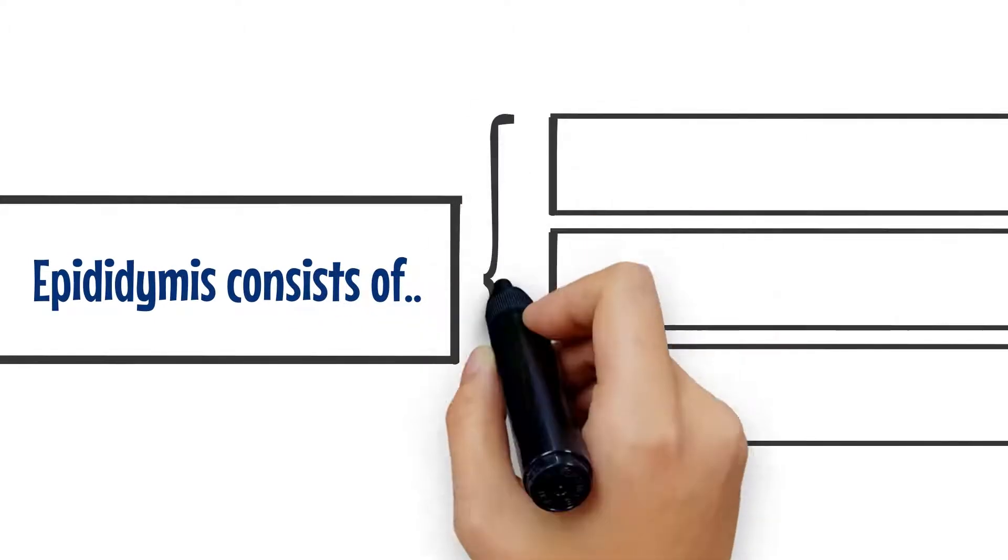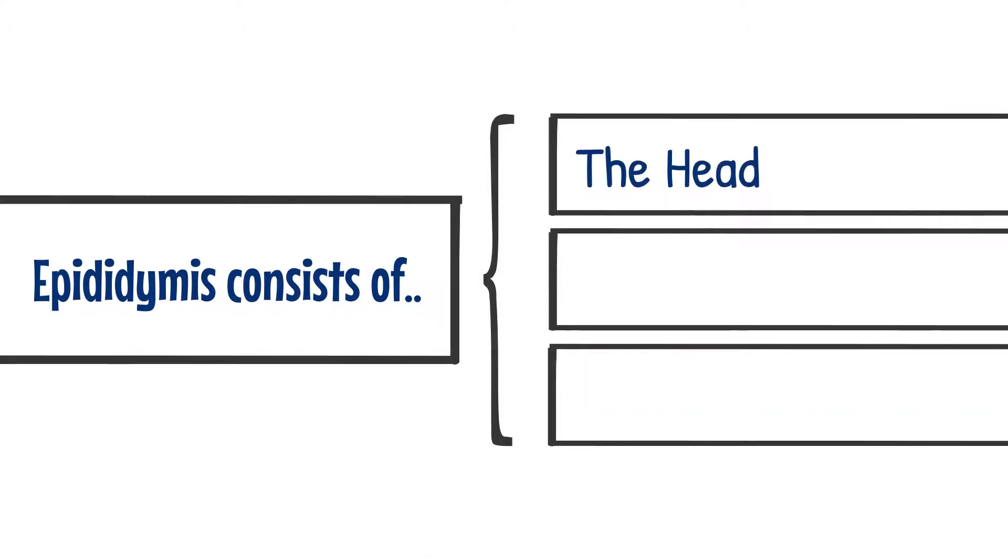The Epididymus has three parts. Near the top of the testicles is the head of the Epididymus, which stores newly created sperm until they are ready to undergo maturation.